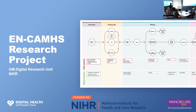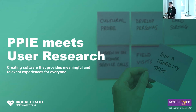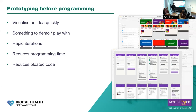In research we often talk about PPIE, and in software we often talk about user research — I think PPIE meets user research in building digital mental health technologies. We always prototype before we program: it's much less expensive to create design prototypes than to pay software engineers to code, and it gives users something to play with, a working prototype they can click through and give quick feedback on, built in rapid iterations. It reduces programming time because we're not building things that never get used, and it reduces bloated code.